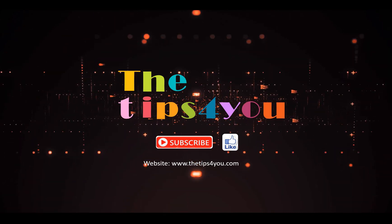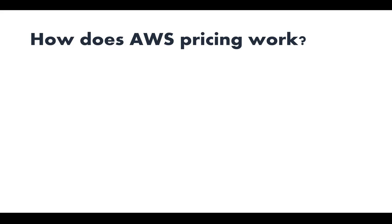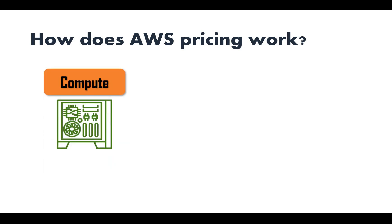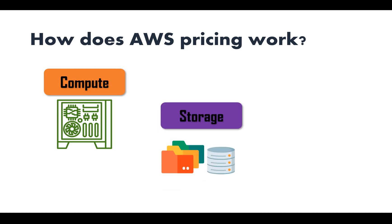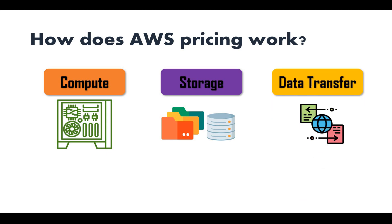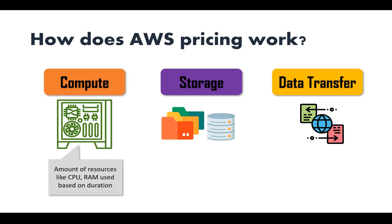Let's discuss how AWS pricing works. There are three main categories where your charges will really be impacted: compute, storage, and data transfer. Most of the resources and services you use from AWS will fall into one of these three categories — compute resources, data storage, or how much data you're transferring through the internet.